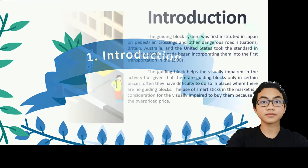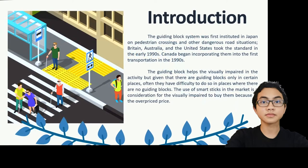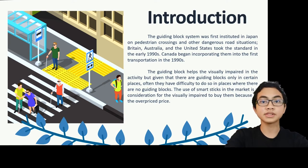Introduction. The guiding block system was first introduced in Japan on pedestrian crossings and other dangerous road situations. The existence of guiding blocks helps blind people to know their direction so they are not in an environment they don't want.